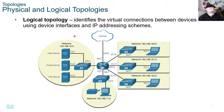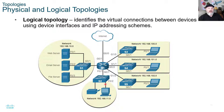This is the logical topology, which identifies virtual connections between devices using device interfaces and IP addressing schemes. We still show servers, routers, switches, and end devices, but now we have the actual connections labeled — for example, Gigabit 0/0, F0/1, F0/2 — so we know exactly what connections are on a particular switch. This also gives us the IP addressing, in this case IPv4 addressing.